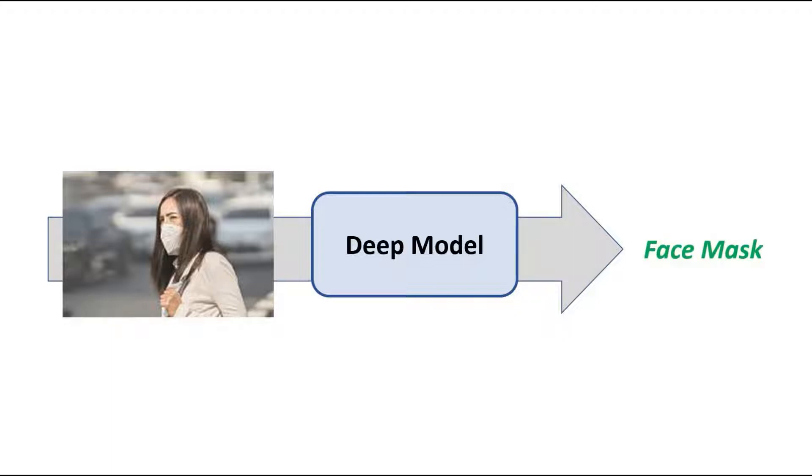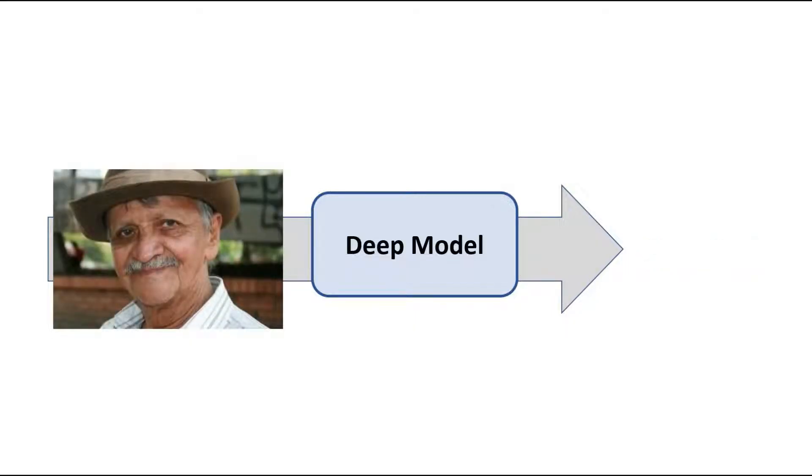In this example, we have an input image that is passed to some deep learning model that must return whether the person in the image is wearing a face mask. There are only two output possibilities, face mask or not face mask, and hence this is a simple binary classification task.